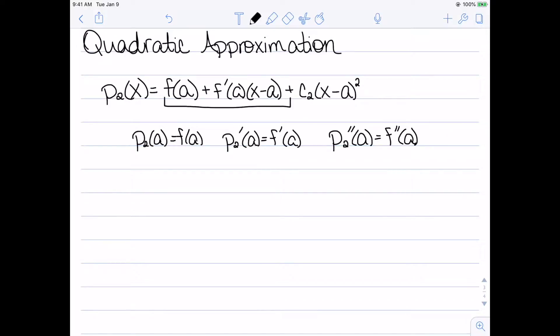So what we have is that if we actually take the second derivative of this polynomial that we have and then plug in a, we get that the solution is 2c_2. But we want that to be equal to f''(a). So now I have the value of c_2. It's the second derivative of f over 2.